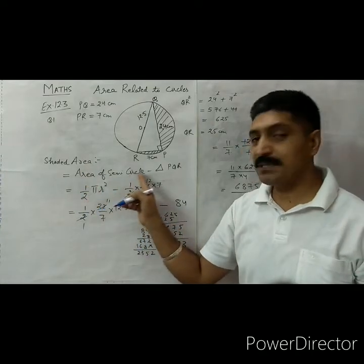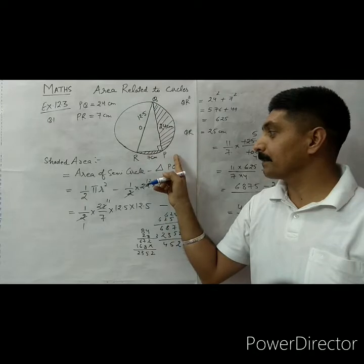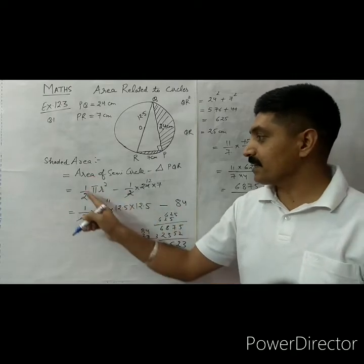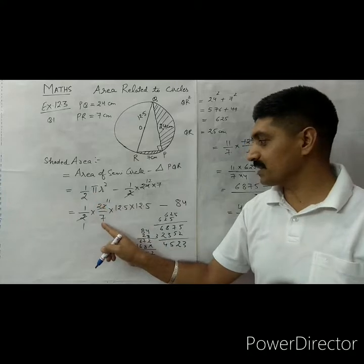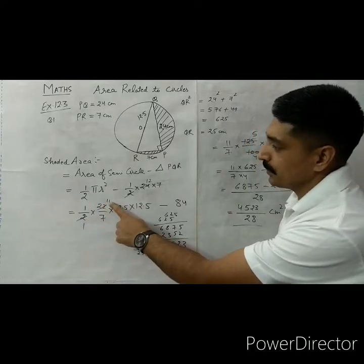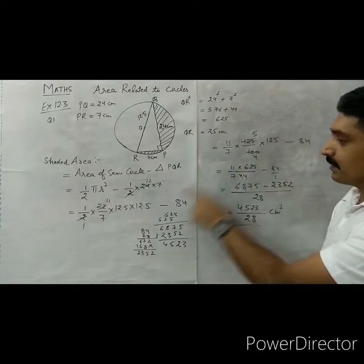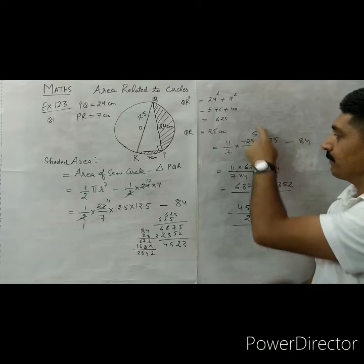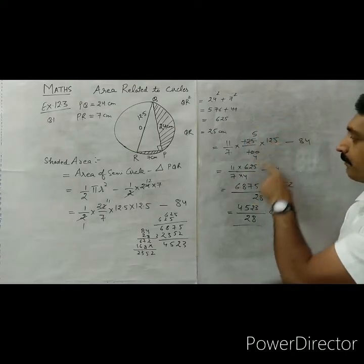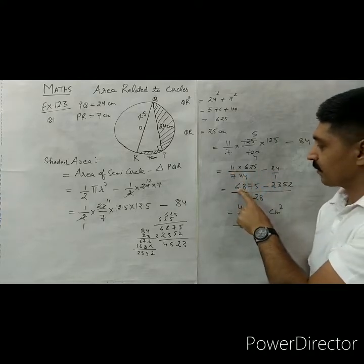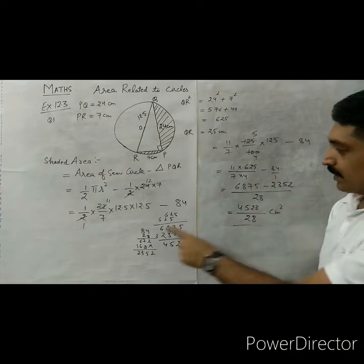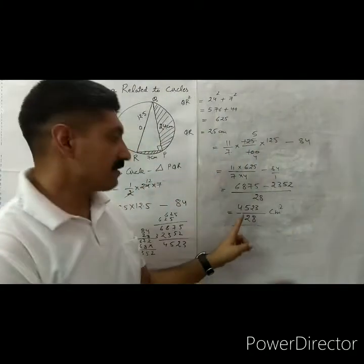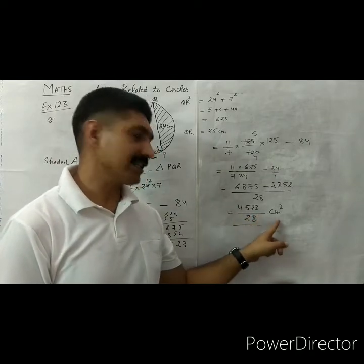Area of the shaded portion is area of a semicircle minus area of the triangle QRP. Area of the triangle is (1/2) × base × height = 84. Area of the semicircle is (1/2)πr². Taking π = 22/7, the 2 cancels with 22 to give 11/7. Resolving decimals: 125 × 125 / 100, then 625 × 11 = 6875. Taking LCM: 84 × 28 = 2352. Subtracting, we get 4523 / 28 centimeter square.